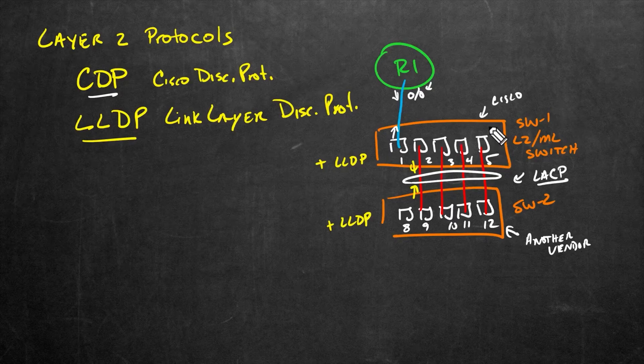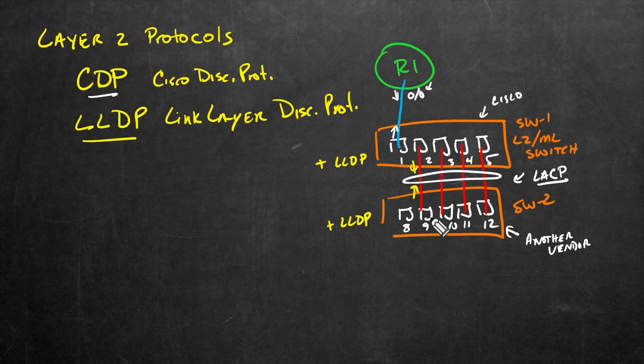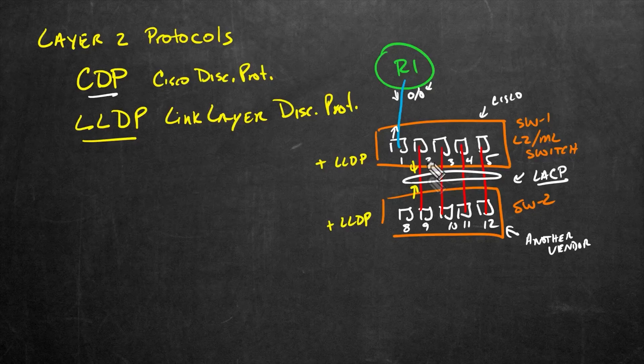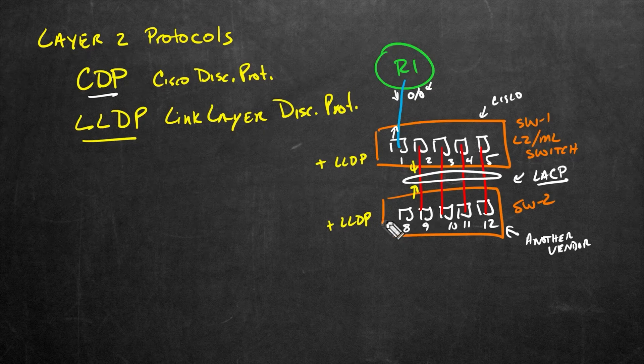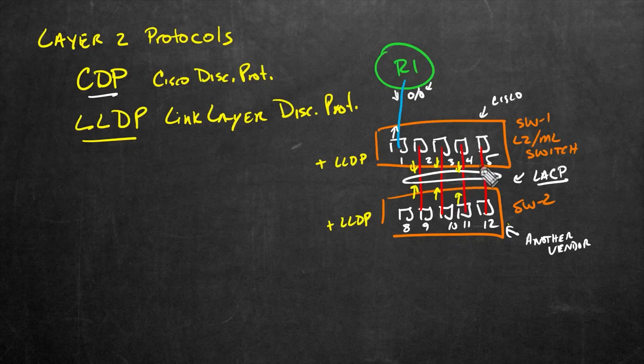So switch one will know, okay, on my local port two, I'm connected to this switch, switch two, here's its capabilities, here's its management IP address. And I'm directly connected from my port two over to its port nine, because in the advertisements coming in from switch two, it's including not only information about its management IP address and its capabilities, but it's also sending in information about the individual port that's sending those LLDP messages. So those LLDP messages will be sent respectively in and out on each of these ports.